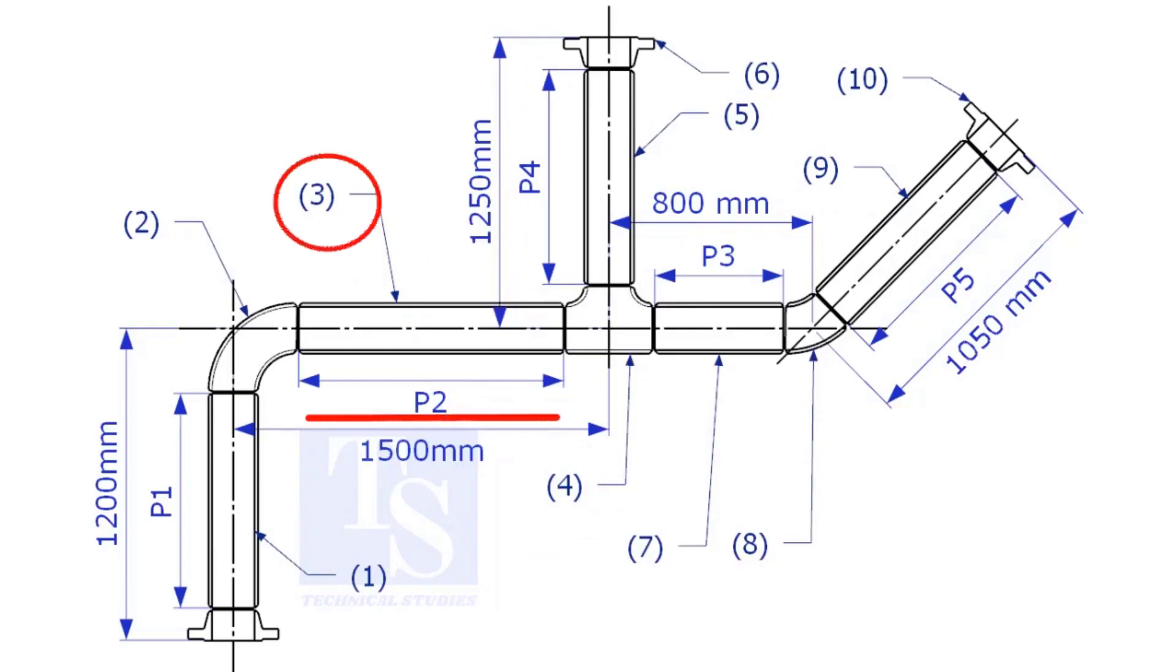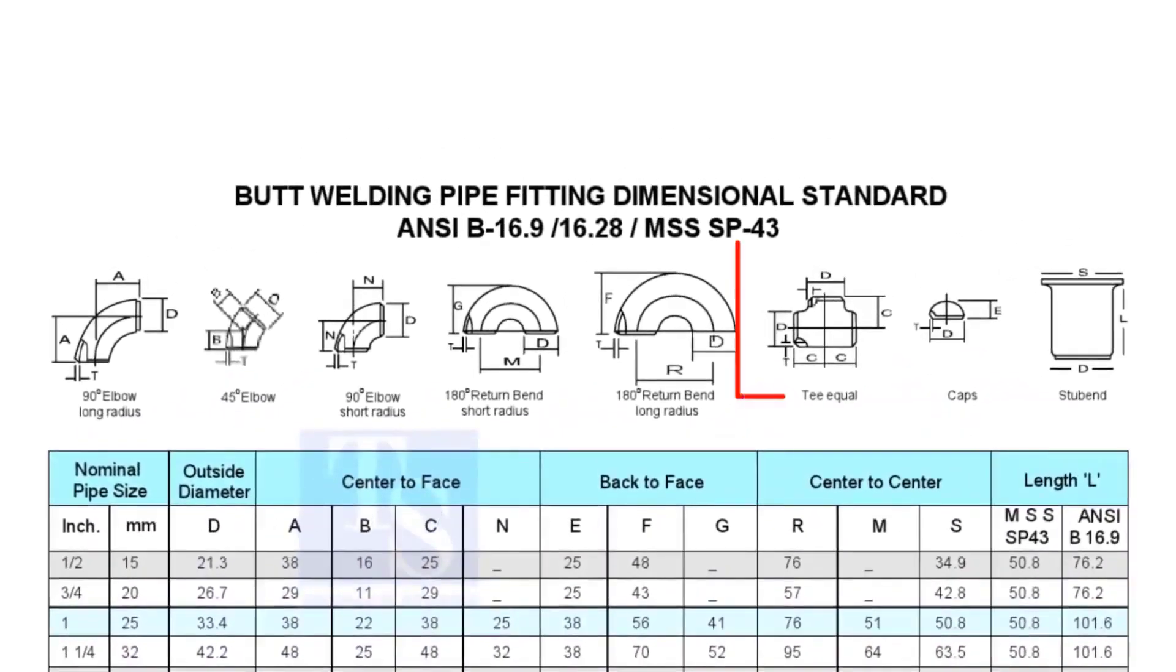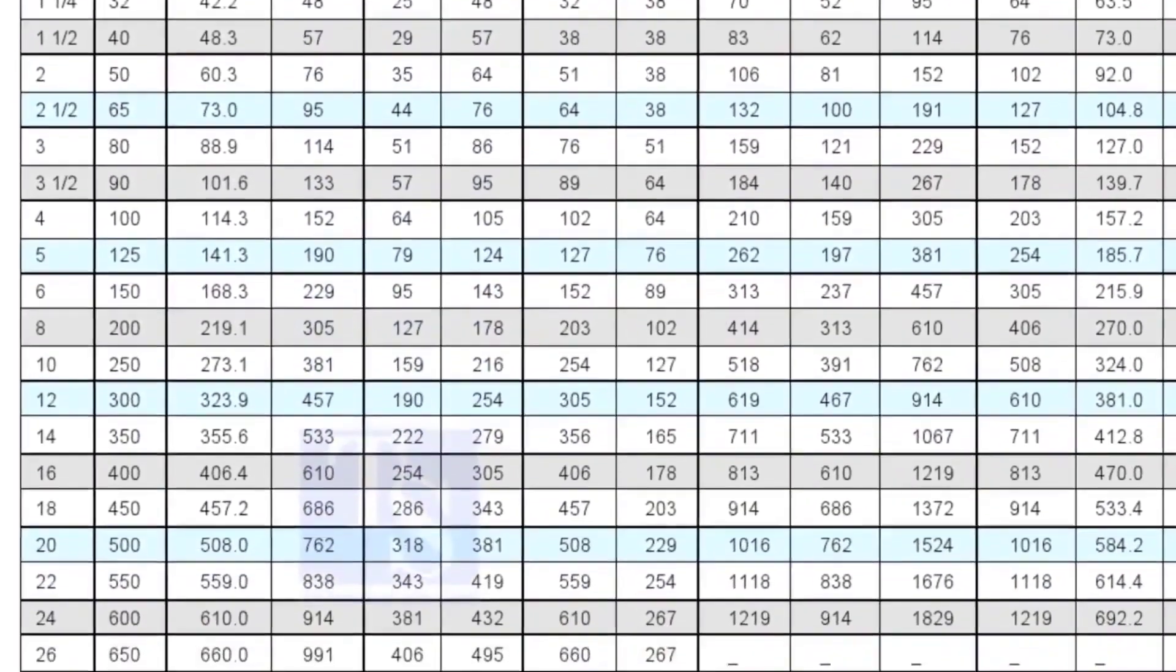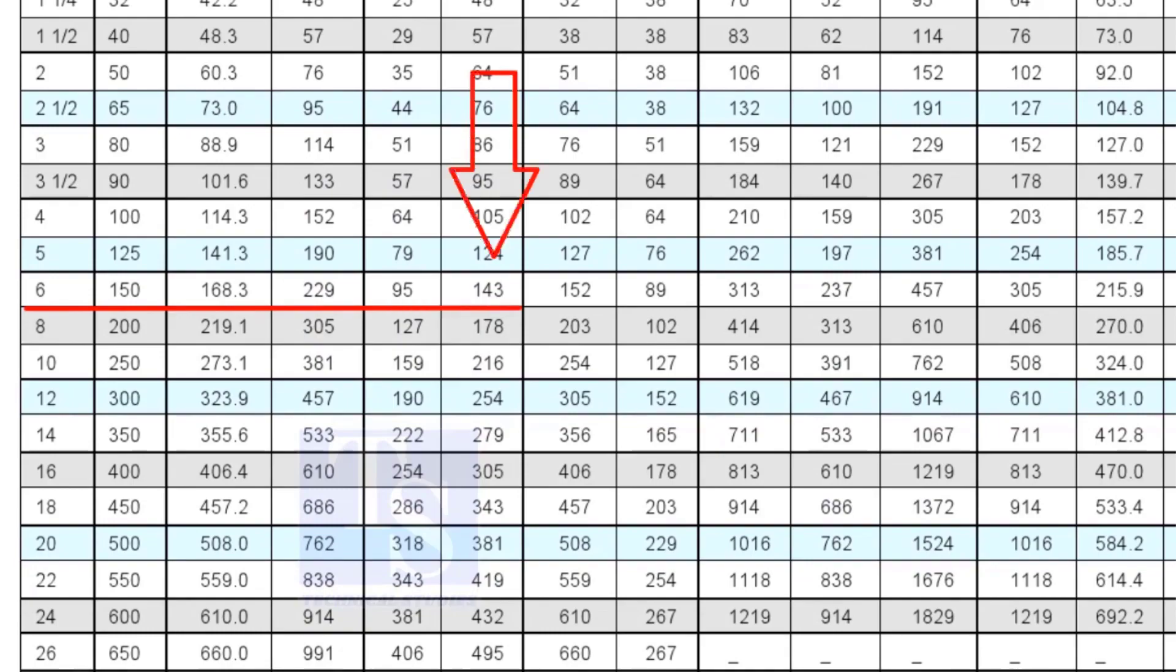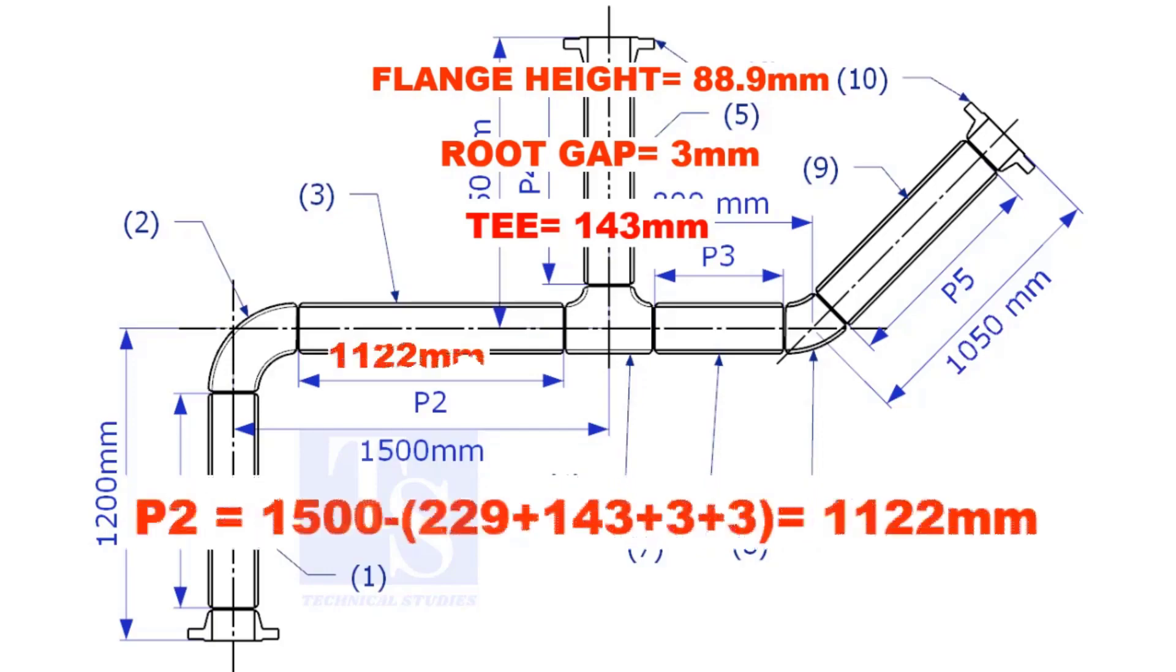Let us calculate the length of item number 3. We already know the take-off length of the 6-inch long radius elbow. Now, check the chart for the take-off length of the equal tee. It is 143mm. The length of item number 3 is 1,122mm.